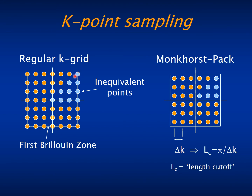We need to integrate over the Brillouin zone, which in practice is done on a grid of uniformly separated points as in real space. Because of symmetry, some points are equivalent, and we need to integrate only over the irreducible part of the Brillouin zone, which is here shown by the blue points.